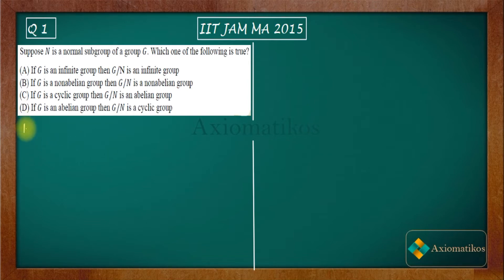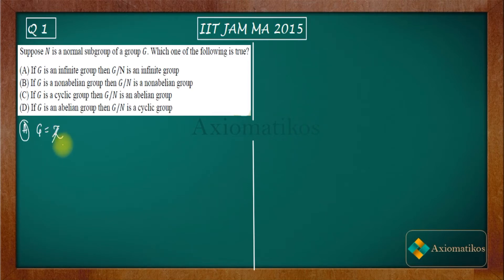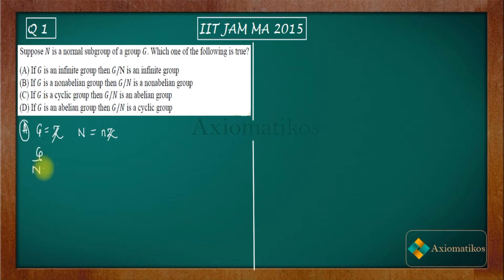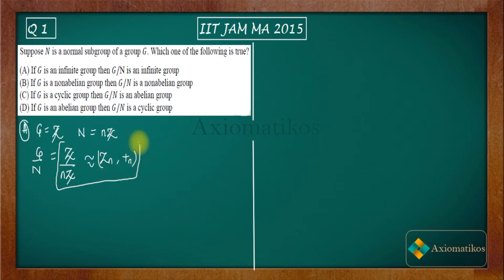I will begin with option A. In option A, it is given that G is an infinite group, then G by N is an infinite group. In my earlier videos I told you that if you take G as the group of integers under addition, and consider N to be any subgroup like nZ — let's say 2Z — then N consists of only positive and negative even numbers. Now what do you know about G by N? You already know that G by N, that is Z by nZ, is isomorphic to Z_n with respect to addition modulo n.